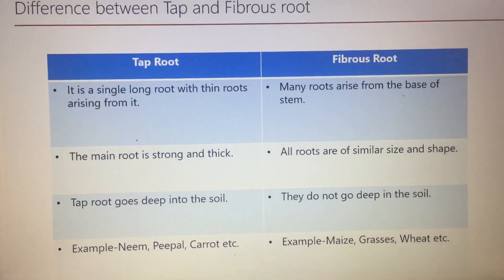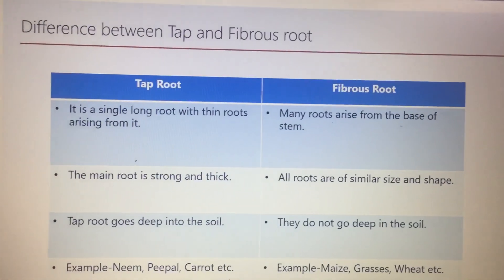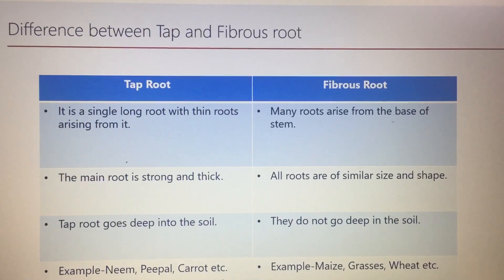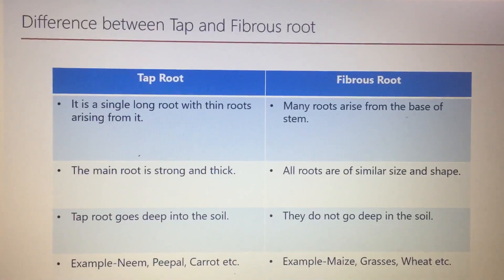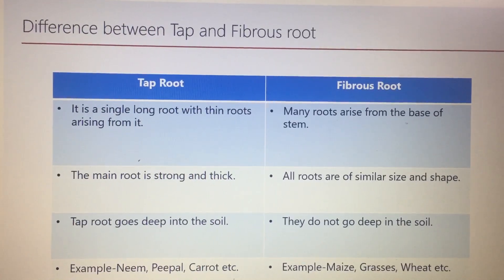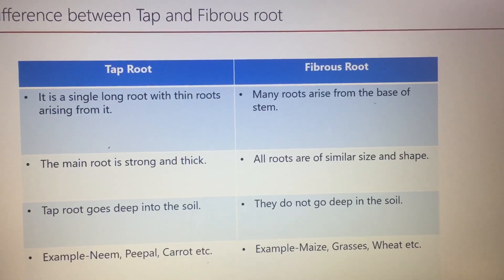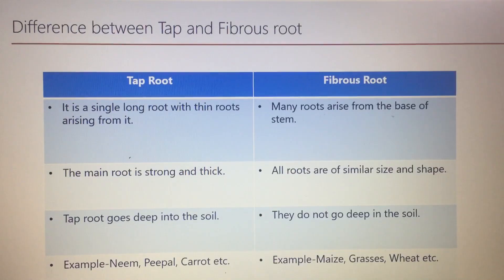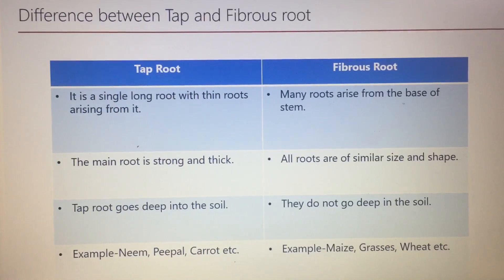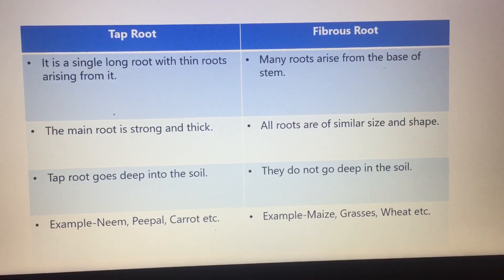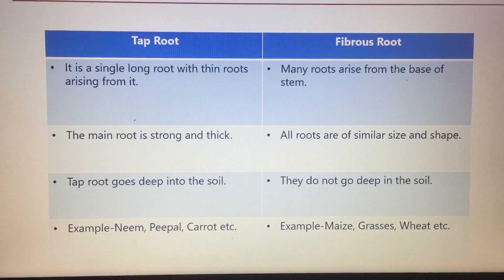Here is the difference between tap and fibrous root. The tap root is a single long root, and many thin roots arise from it. It goes very deep into the soil. The tap root has one main root that is very strong and thick, while in fibrous roots all the roots are the same size and the same shape.